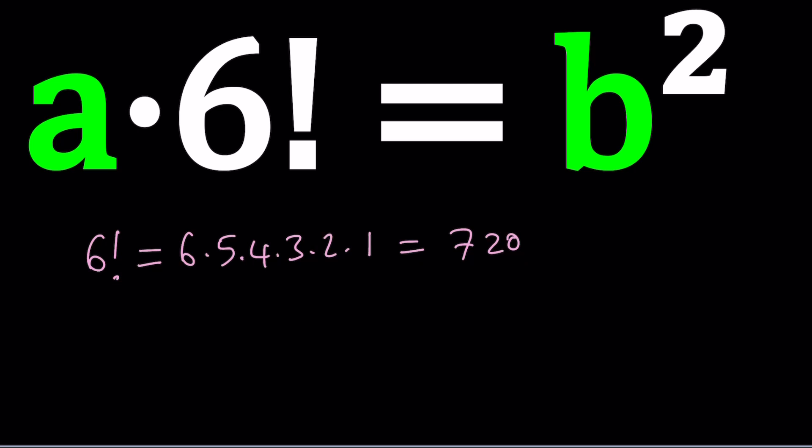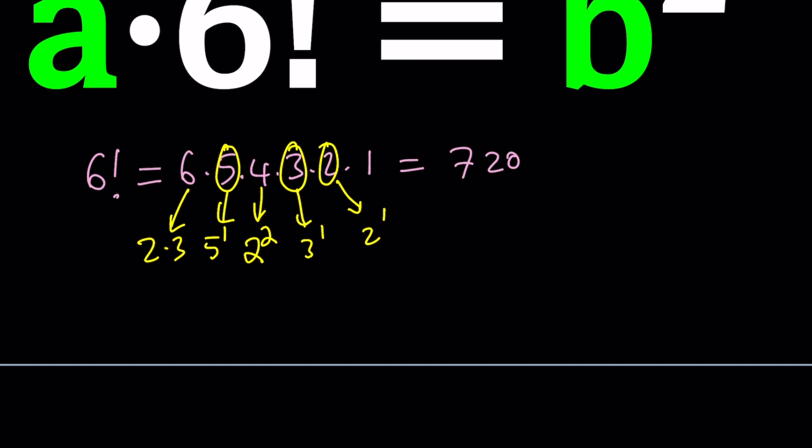For prime factorization, we're going to go ahead and split up each number. And we used this method recently, remember? 2 times 3. 5 is prime. 4 is 2 times 2, or 2 squared. 3 is prime. 2 is prime. So we can write these as 5 to the 1st, 3 to the 1st, 2 to the 1st. Now, if you put these all together, you're going to get 6 factorial equals 2 to the 4th.